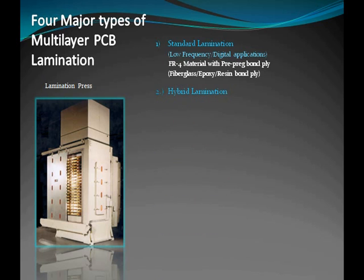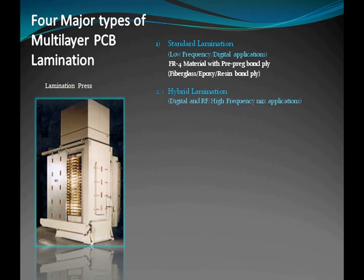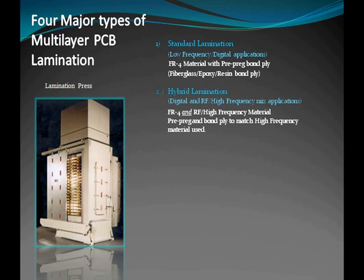The second type of lamination is hybrid lamination, which is used in designs that have a combination of low and high-frequency layers. Some layers may be standard FR4 material while other layers are typically a high-frequency RF laminate. RF laminate is more costly than FR4 and more challenging to use. By using high-frequency material and bond ply on a limited number of specified layers, cost is effectively lowered while increasing performance.